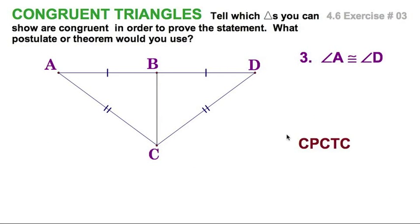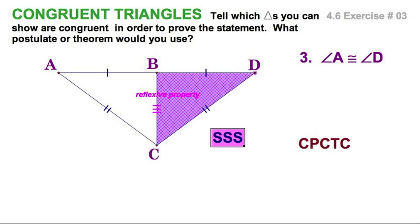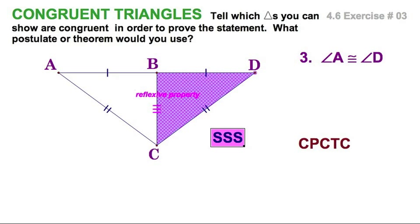Let's do some samples from the book. Here's our first exercise using corresponding parts of congruent triangles are congruent. We're going to prove that these two angles are congruent from the diagram, and of course we're looking for congruent triangles. We need another piece — there it is. They're both using side BC, which is congruent to itself by the reflexive property. Therefore, this triangle is congruent to this triangle, and we can see they're reflections of each other — congruent by side-side-side.